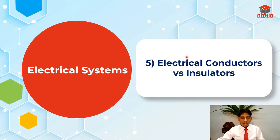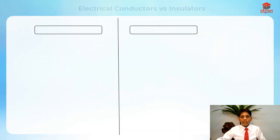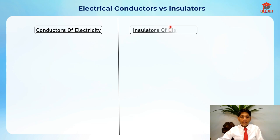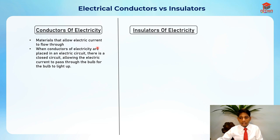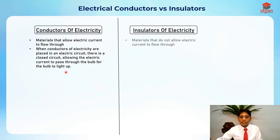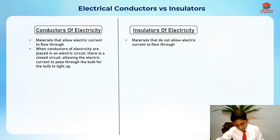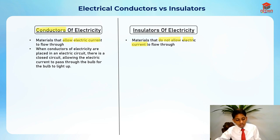For the fifth segment, I'll go through electrical conductors versus electrical insulators. A conductor of electricity is a material that allows electric current to flow through it. When conductors are placed in an electric circuit, there is a closed circuit, allowing the electric current to pass through the bulb for the bulb to light up.